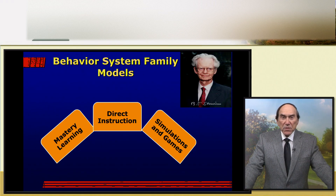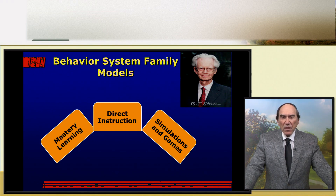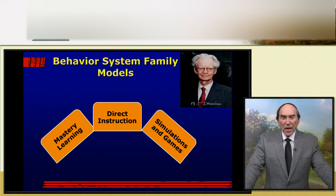The Behavioral Systems family models, based on B.F. Skinner's learning theories, present highly structured outcomes that concentrate on observable objectives for learning content, exhibiting skills, and adapting behavior. This family of models offers finite types of specific predetermined ends within the goals. Direct instruction, mastery learning, and simulation and game-based learning are types within the family.